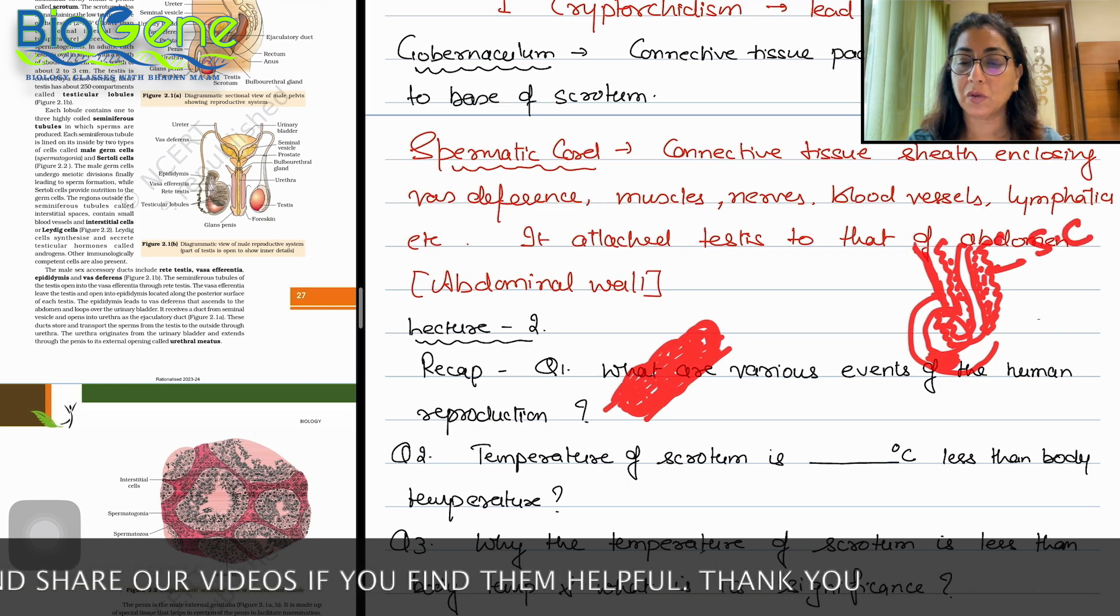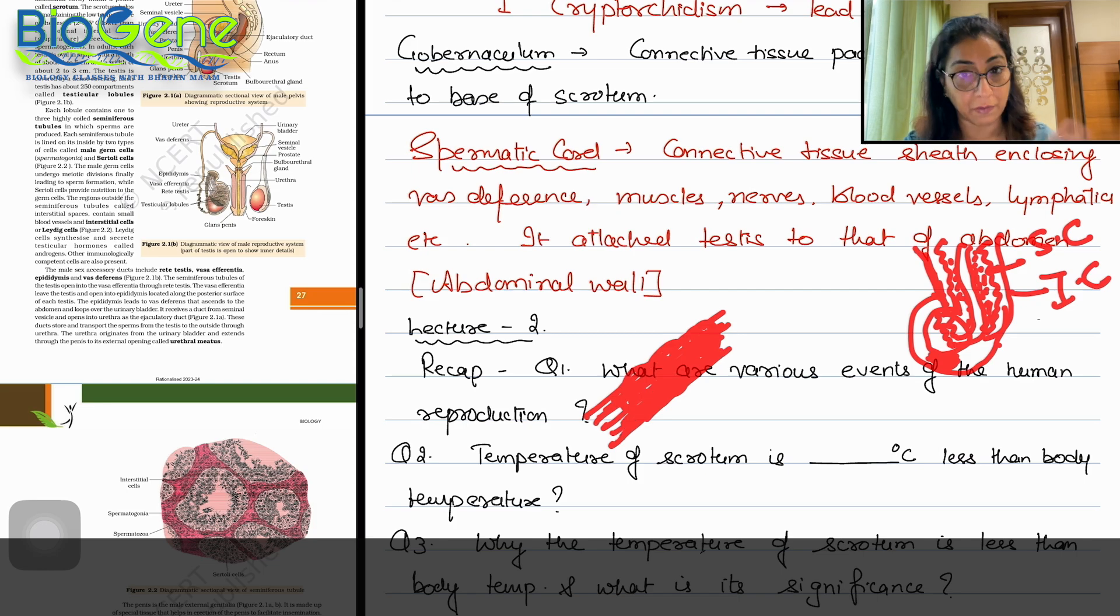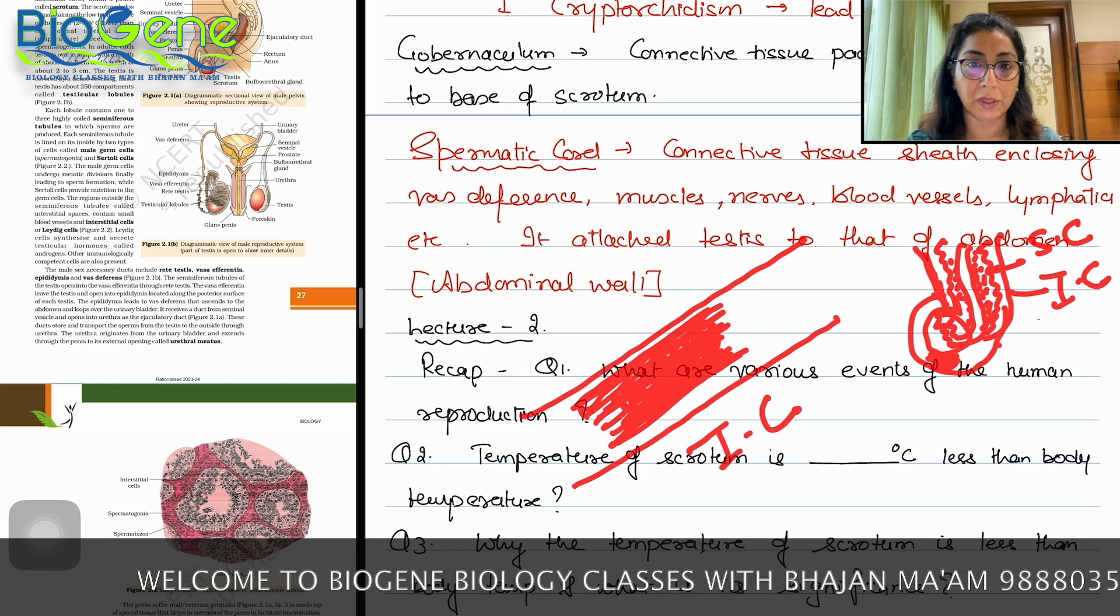That tape-like structure which is wrapped is called a spermatic cord. And where is it going from? This is going from your inguinal canal. So the whole bunch of blood vessels, vas deferens, lymphatics, these are all in a covering. This is called spermatic cord.